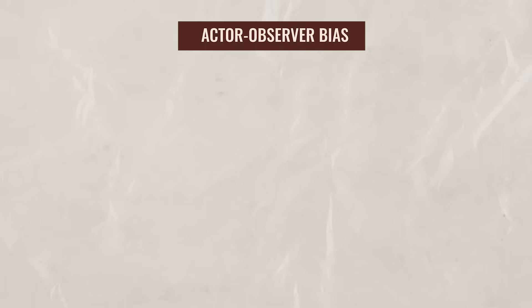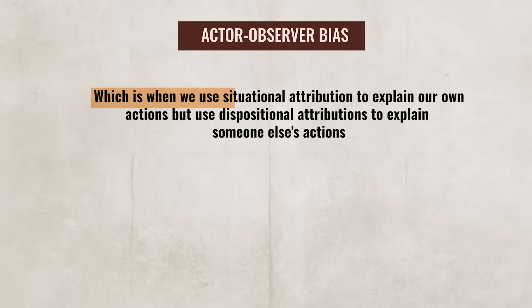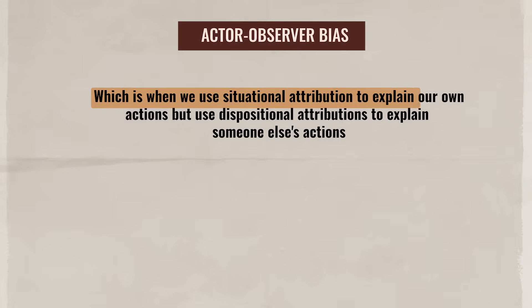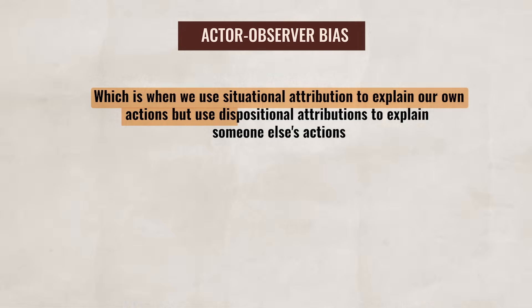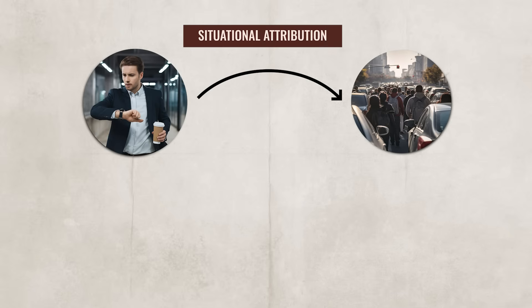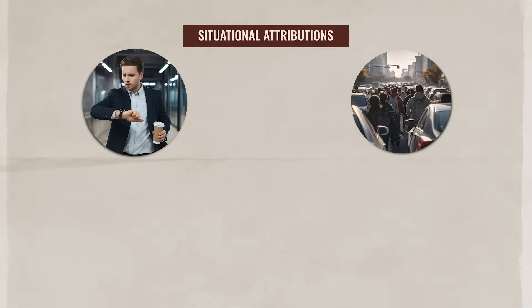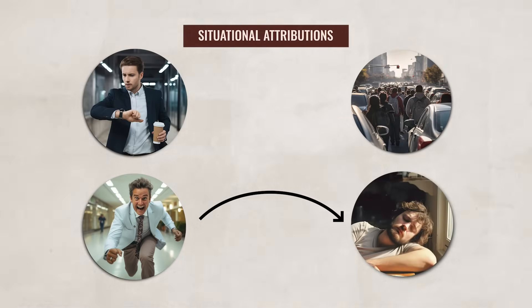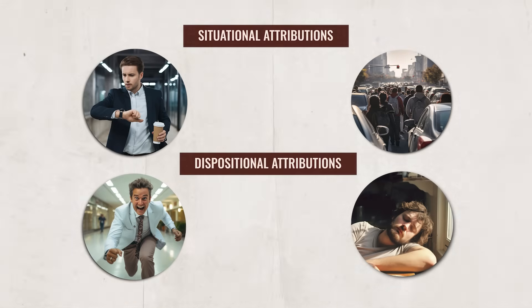Speaking of biases, you also want to be familiar with the actor-observer bias, which is when we use situational attribution to explain our own actions, but we use dispositional attributions to explain the actions of someone else. For instance, if you arrive late to work, you might blame the traffic — which would be the situational attribution. But if someone else is late, you might think they're just lazy and disorganized, which would be an example of dispositional attribution.